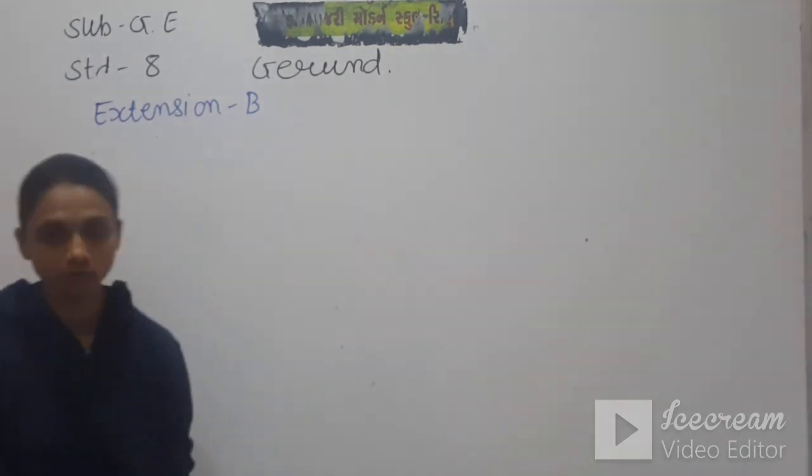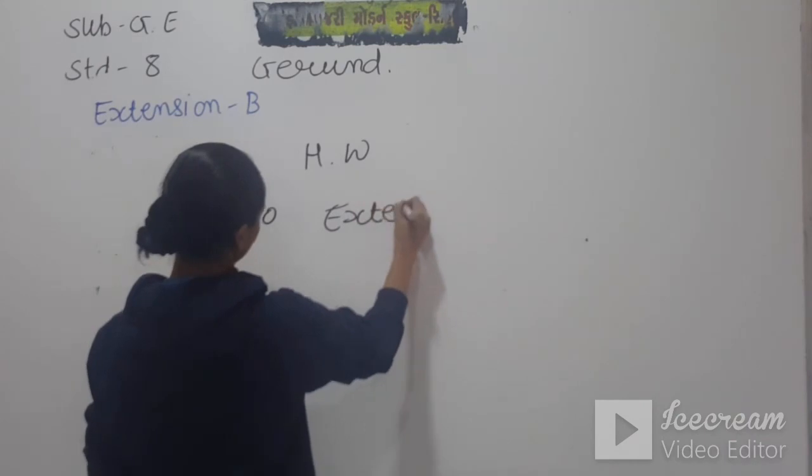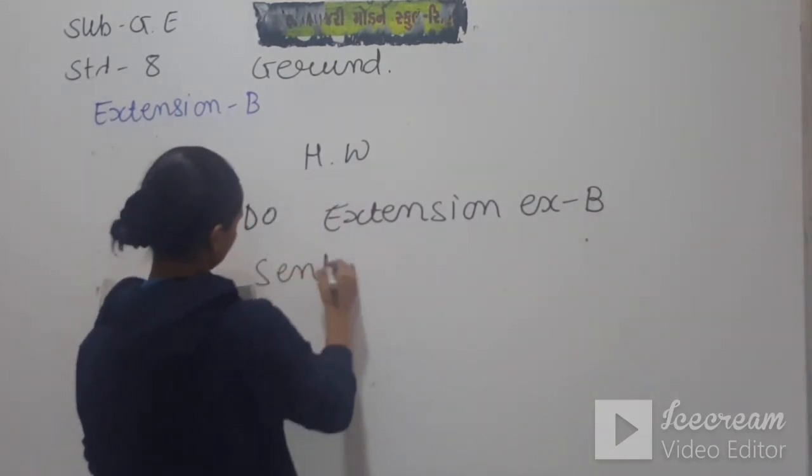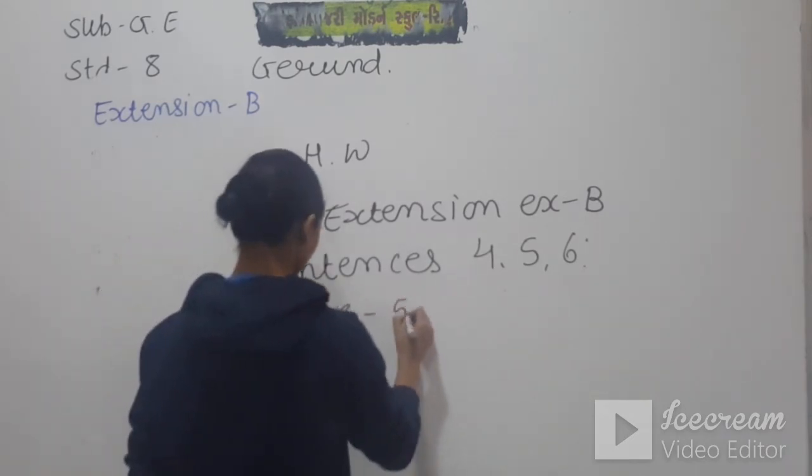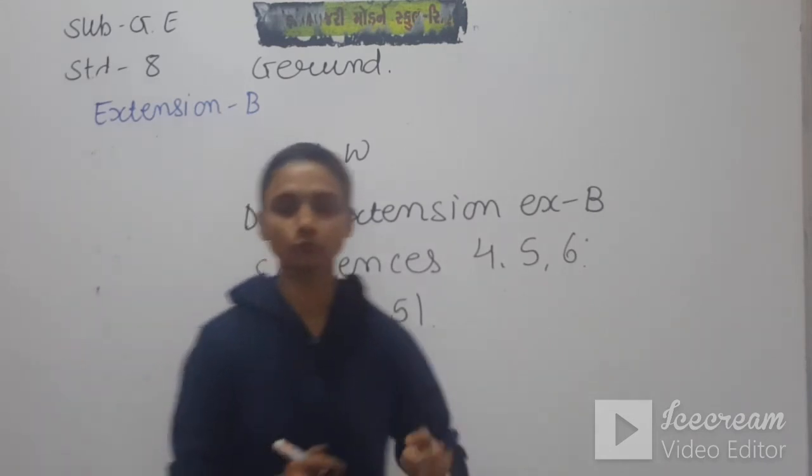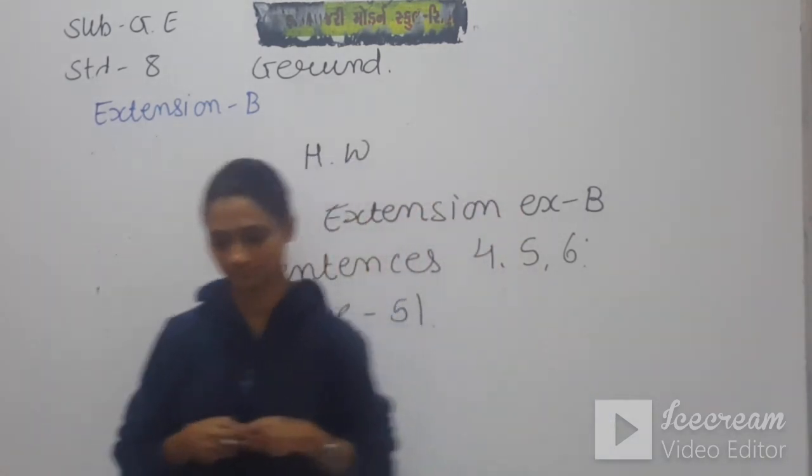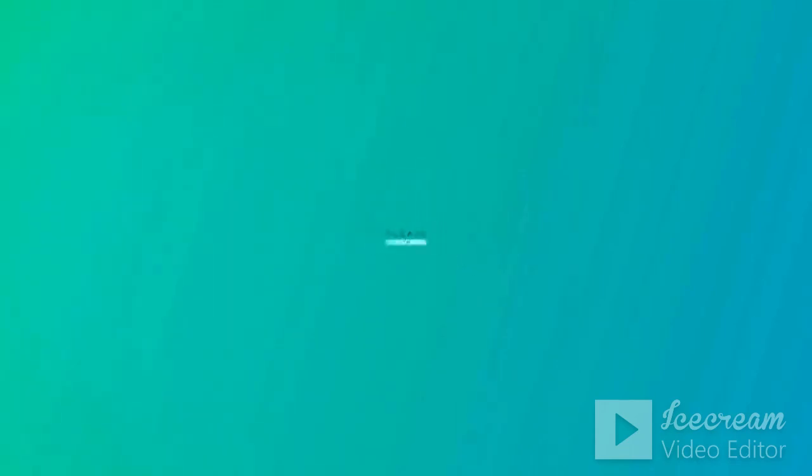Okay students, so this is for this video. I would like to give you homework. Your homework is: do Extension Exercise B sentence number 4, 5, 6, which is there on page number 51. So these three sentences you have to do in your homework like we did 1, 2, 3. We will meet again in next video with new unit. Please take care. Thank you.